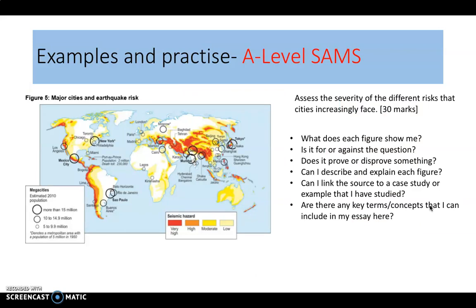When you open your exam paper for this section you'll be presented with either three or four different figures, and it's a good idea to spend a little bit of time analysing each of these. For each figure, go through these bullet points: What does each figure show me? Is it for or against the question? Does it prove or disprove something? Can I describe and explain each figure? Can I link the source to a case study or example I've studied? And are there any key terms or concepts I can include in my essay?